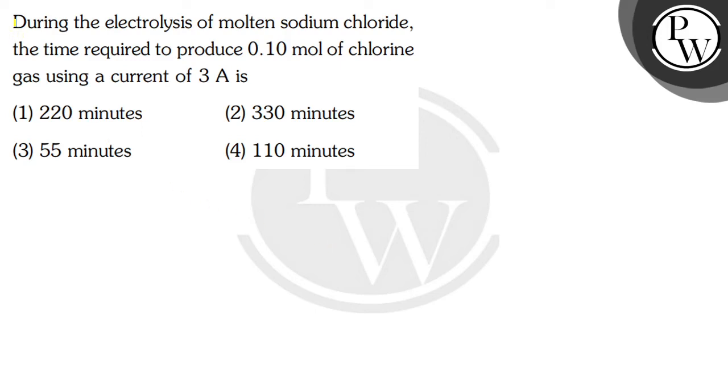Hello Bacho, let's read this question. The question says that during the electrolysis of molten sodium chloride, the time required to produce 0.10 mole of chlorine gas using a current of 3 amperes is. The options are 220 minutes, 330 minutes, 55 minutes, and 110 minutes.